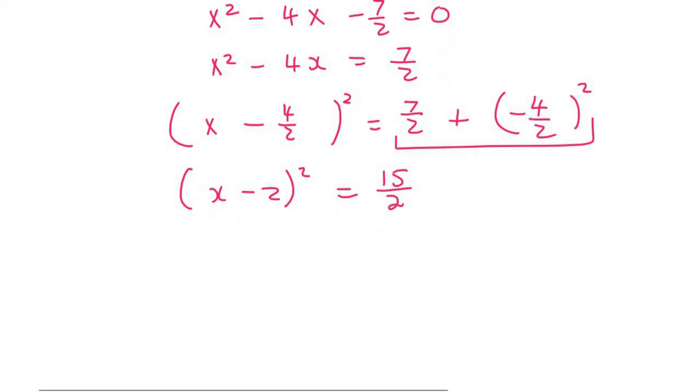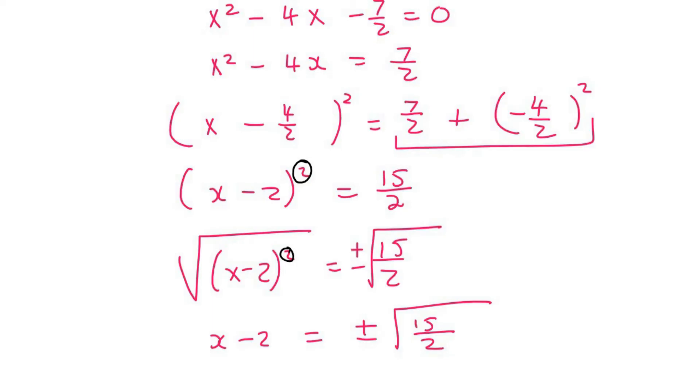Then what I'm going to do is I'm going to square root both sides. Because I know that a square root will get rid of this. So that's going to look like this. But remember that when you square root the right-hand side number, we say plus and minus. Now, this square is going to be cancelled out by the square root. And so we're literally going to be left with x minus 2 on the left, and then plus minus the square root of 15 over 2 on the right-hand side.